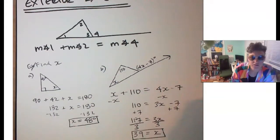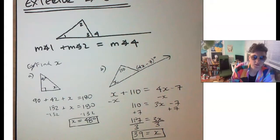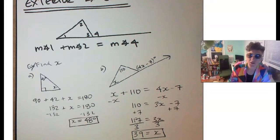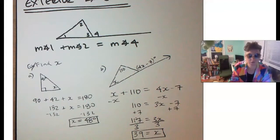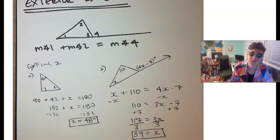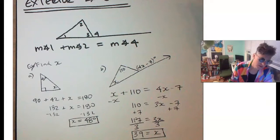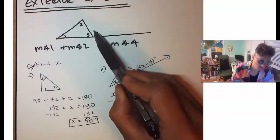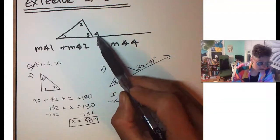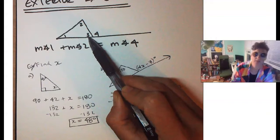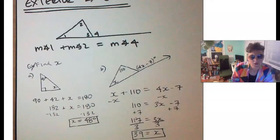Nice, well done scholars! That is our intro to triangles. We talked about how triangles have two names — one for their sides and one for their angles — and went over our vocab words. We talked about the Triangle Sum Theorem saying all the angles in a triangle add to 180 degrees, and the Exterior Angle Theorem saying an exterior angle equals the other two non-adjacent interior angles added up. All right scholars, I love you, I'll see you next time — peace out!